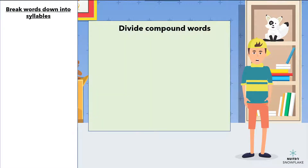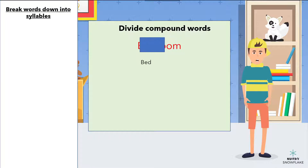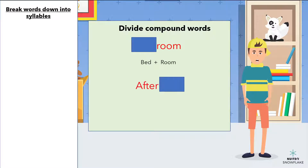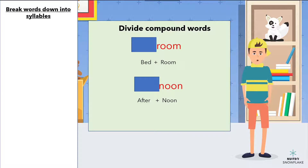Compound words — that is, two words that are put together to form a new word — can be broken down into the words they consist of. For example, 'bedroom' can be broken down into 'bed' and 'room.' This tells us that the word means a room where we have our bed. 'Afternoon' can be broken down into 'after' and 'noon,' which tells us that afternoon means a time that comes after noon.